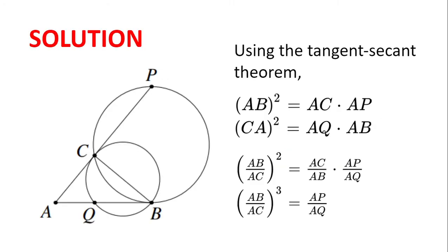So, firstly, using the tangent secant theorem on the larger circle, we find AB squared is equal to AC multiplied by AP.